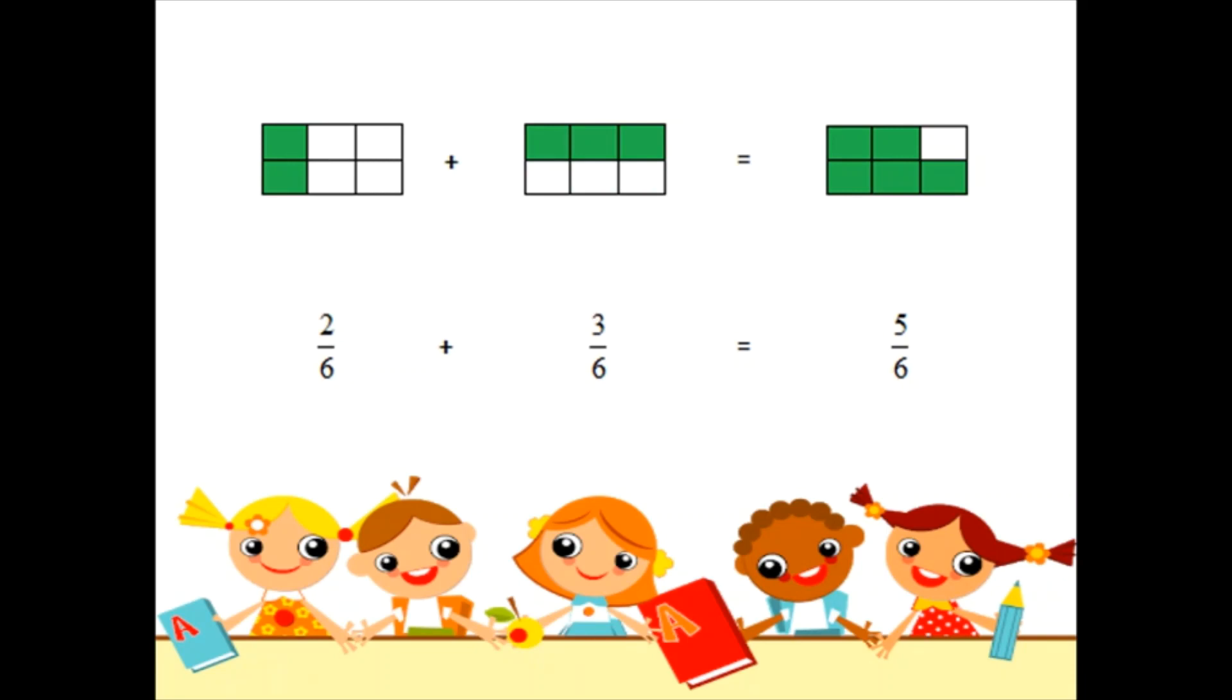Here, 2 by 6 is added to 3 by 6. Here also children, the denominators are same. So we will be adding the numerators in the diagram also and numerically also to get the answer as 5 by 6.